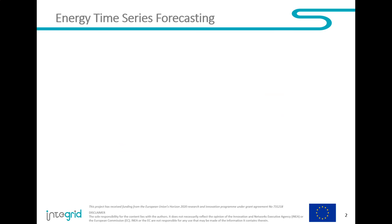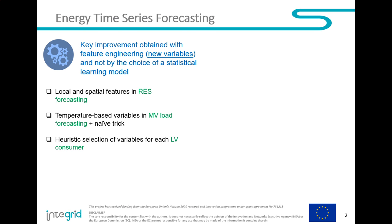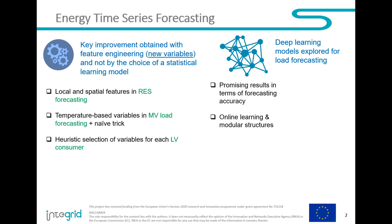On energy time series forecasting — this is a project on smart grids. We want to forecast the load and consumption on the distribution grid and also on clients on that grid, and also renewable energy. One thing we are doing is not focusing on statistical models. Most of the improvement we are having is by creating new features out of the raw data — feature engineering. We use local and spatial features for renewable generation, temperature-based features for load forecasting, and selected important variables for low voltage consumption forecasting. A key result is that we can get a lot of improvement by working the input dataset rather than focusing on the statistical models.